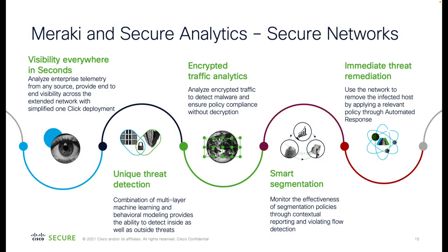What do Meraki and Secure Network Analytics together provide? They provide a secure network. First, you get visibility everywhere for anything connected in your environment. Second, you get unique detections based on behavioral modeling and machine learning, even when traffic is encrypted. Third, you get the ability to analyze your network segmentation and detect segmentation violations, identifying the exact source of those violations. And finally, you can not only detect threats or segmentation violations, but also remediate and automate that remediation if needed.